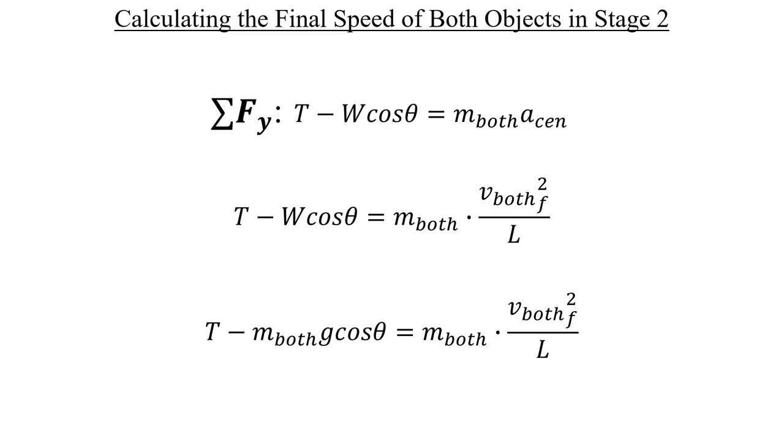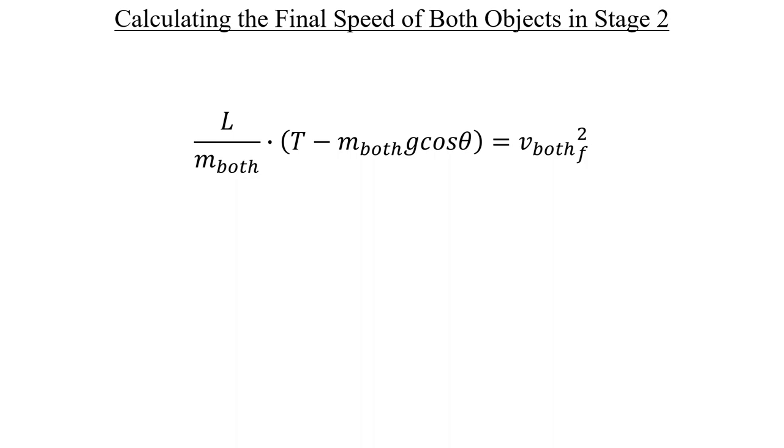I'm going to multiply both sides by the length of the chord, and then divide both sides by the mass of both objects, like this. If we take the square root, we now have an equation for the final speed in stage two.